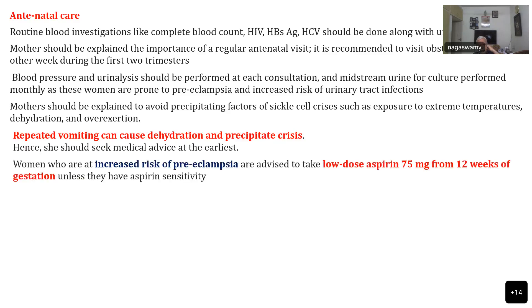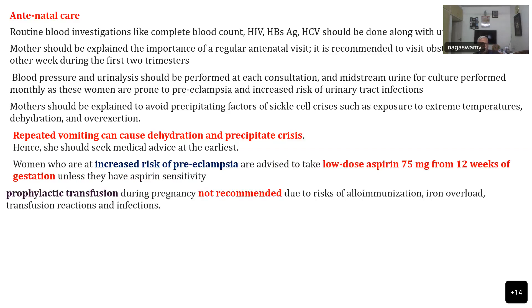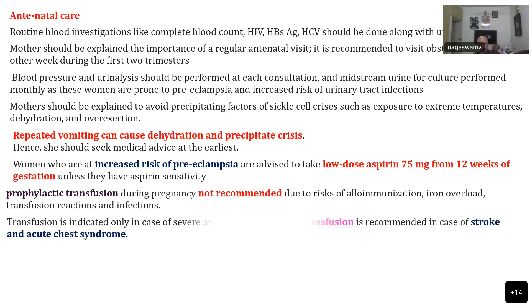Women who are at risk of pre-eclampsia are advised low dose aspirin, 75 mg from 12 weeks of gestation, unless they have aspirin sensitivity. Prophylactic transfusion is not recommended because it can cause alloimmunization, iron overload, transfusion reactions, and infections. Transfusion is indicated only in case of severe anemia, and exchange transfusion is recommended in case of stroke or acute chest syndrome, as these two conditions warrant immediate emergency exchange transfusion.